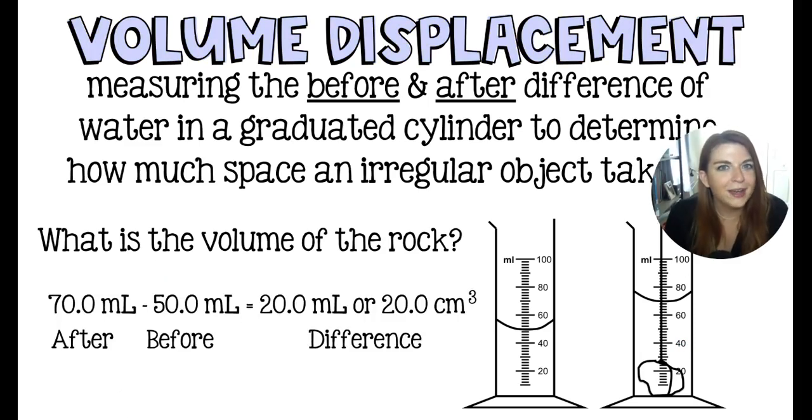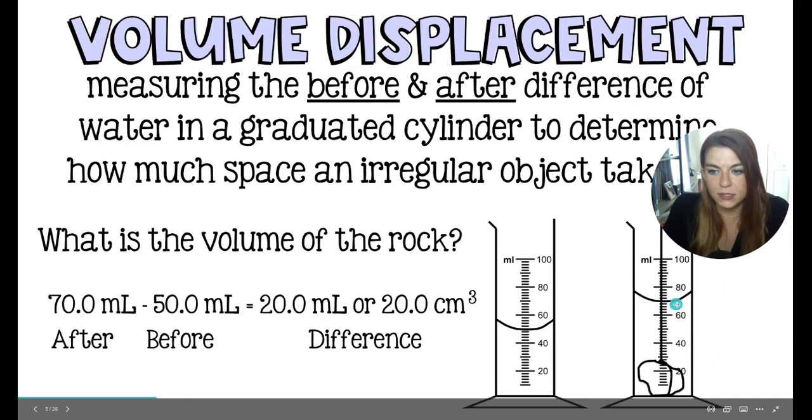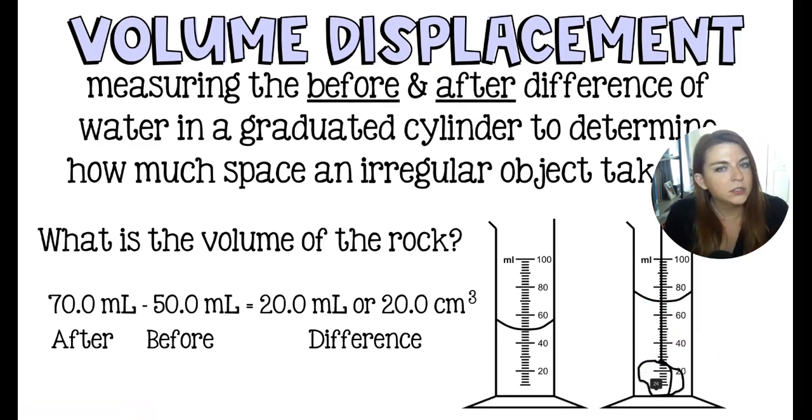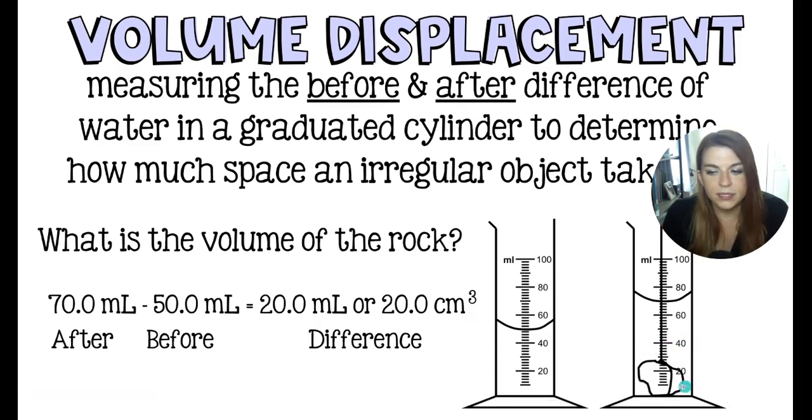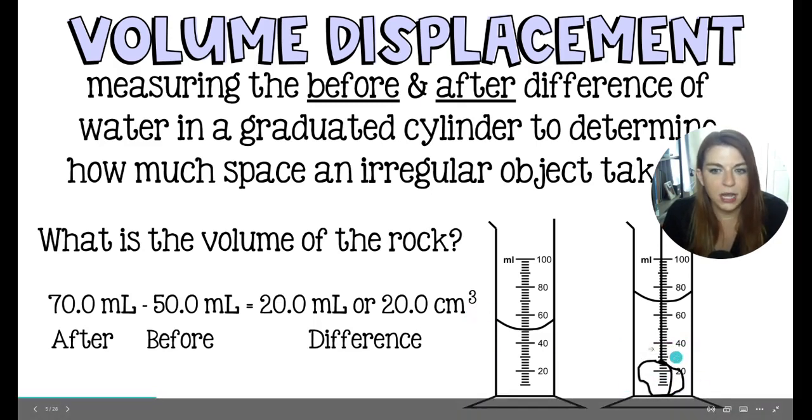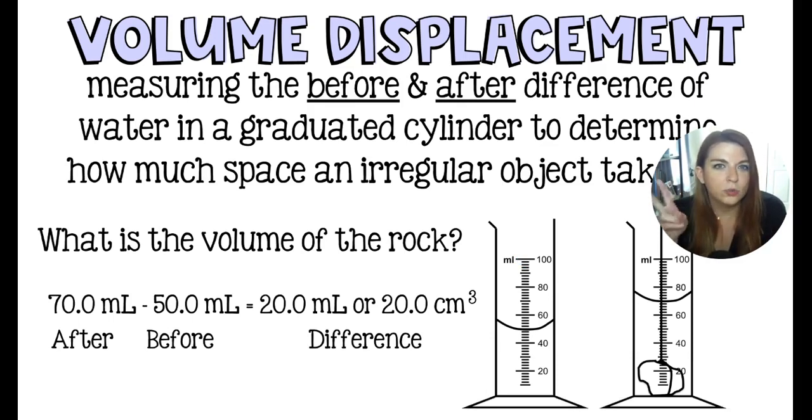So you should have written down the before volume of 50 milliliters and subtract that from the final volume of 70 milliliters after the rock is added. Subtract those two numbers and you get 20 milliliters, but because this is a solid object, I recommend using the cubic centimeters instead, because we're indicating that this is a solid. One milliliter takes up the exact same amount of space as one cubic centimeter. So those technically are interchangeable, but it's better to use the cubic centimeters to indicate that you're measuring a solid.